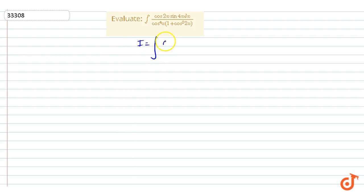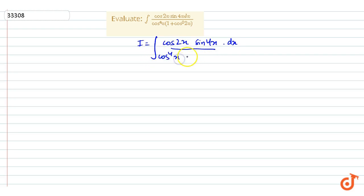In this question, we have to find the integration of cos 2x into sin 4x dx divided by cos 4x bracket 1 plus cos square 2x. We have to find the integration of cos and sin.